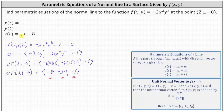This is important: the coefficient of t is the value of c from the direction vector, indicating we need a direction vector in which the z-component equals -1, which is what we have. Remember, any scalar multiple of this vector would also be a valid direction vector.